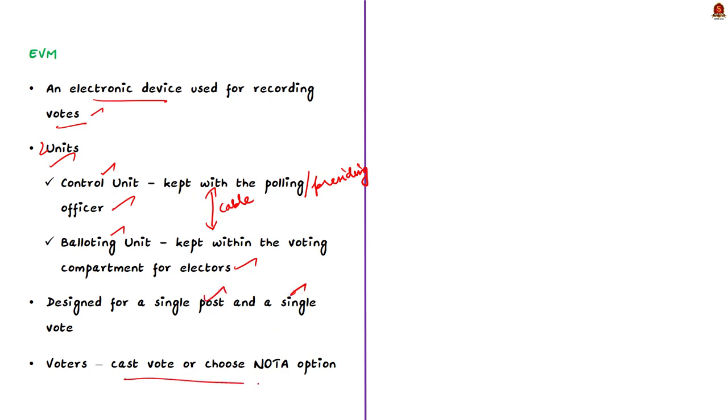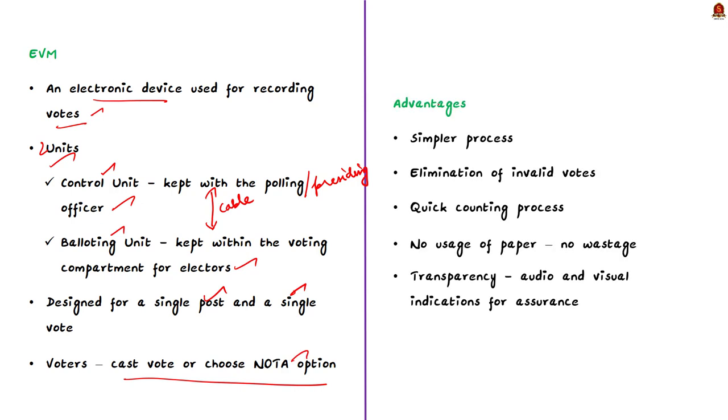Through an EVM, a voter can cast their vote for the candidate of their choice or choose the NOTA option. These EVMs are used because they have certain advantages. Firstly, voting by EVMs has made the process simpler as one does not need to mark a ballot paper and put it in the ballot box. In an EVM, the voter has to just press the button against the candidate and symbol of his choice and the vote gets recorded.